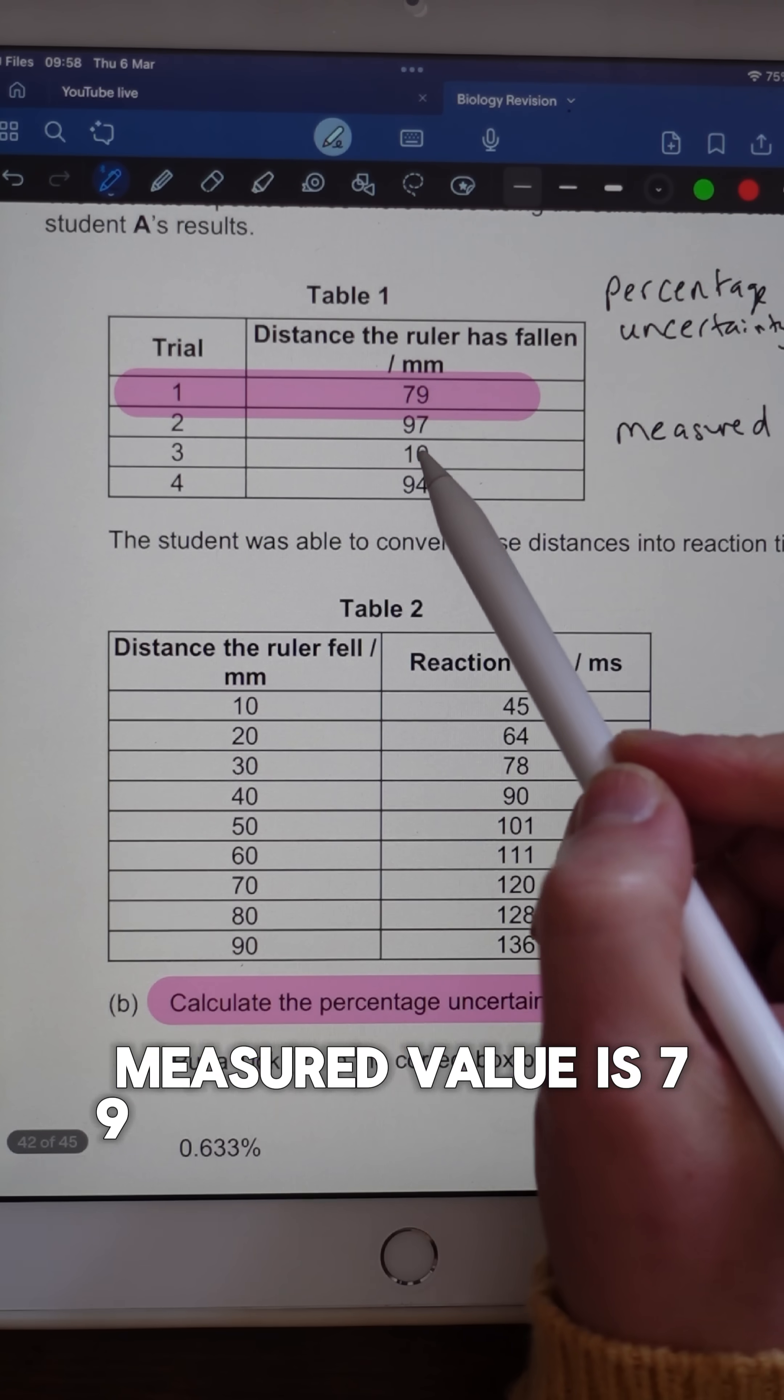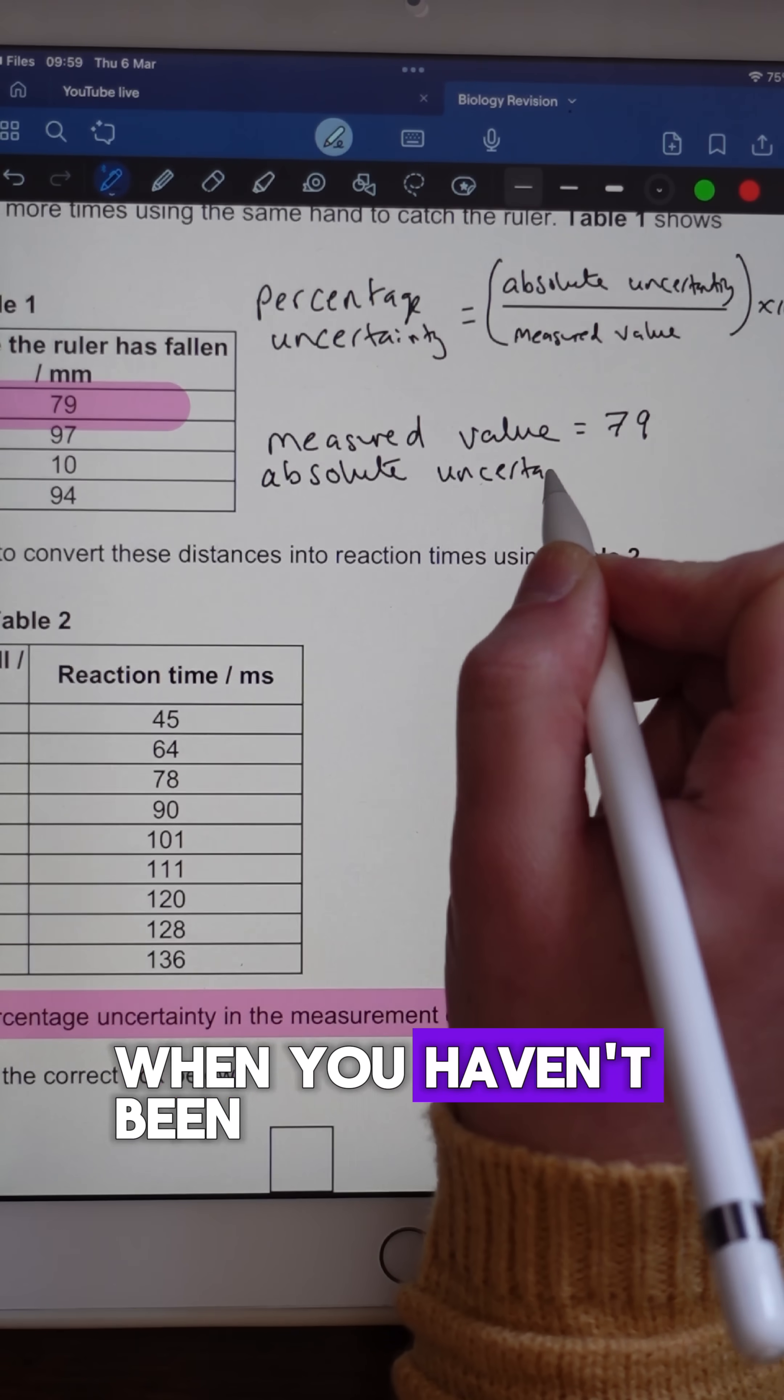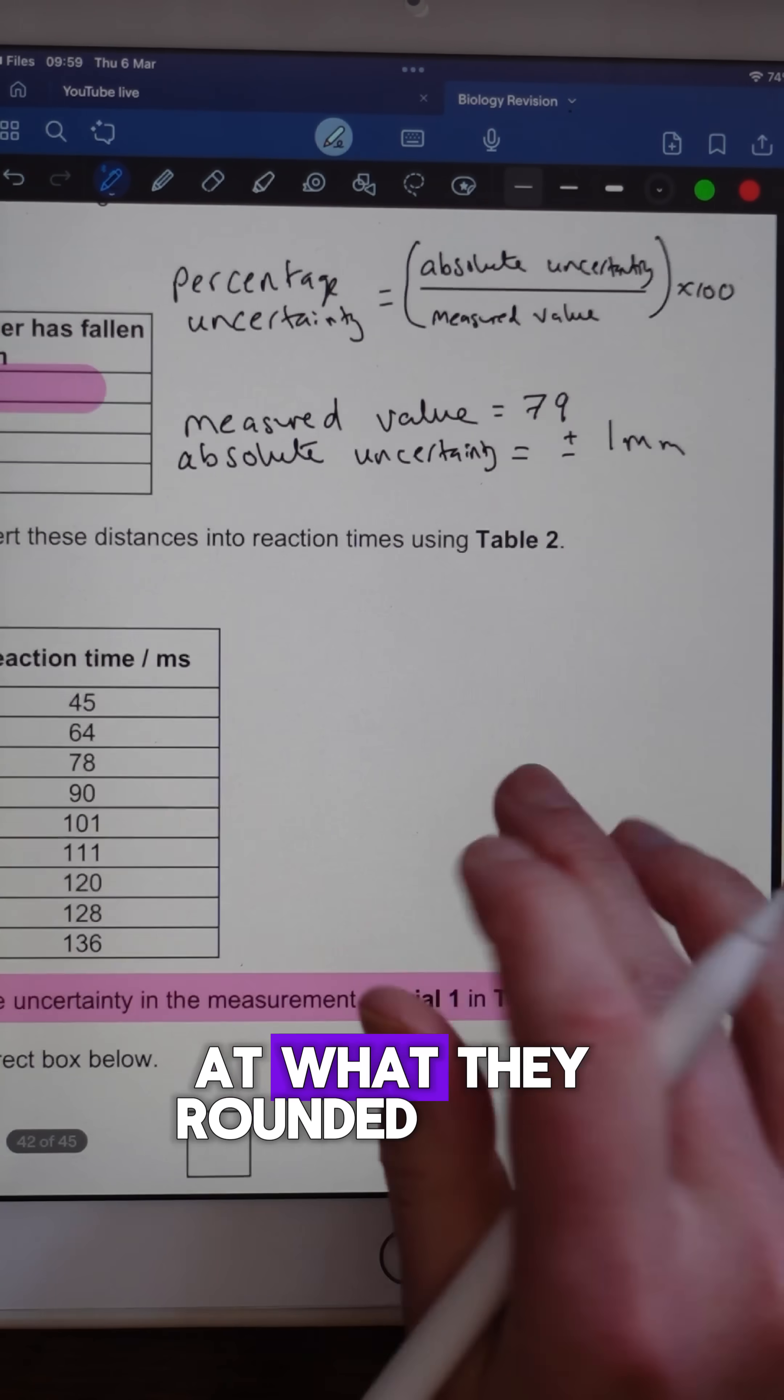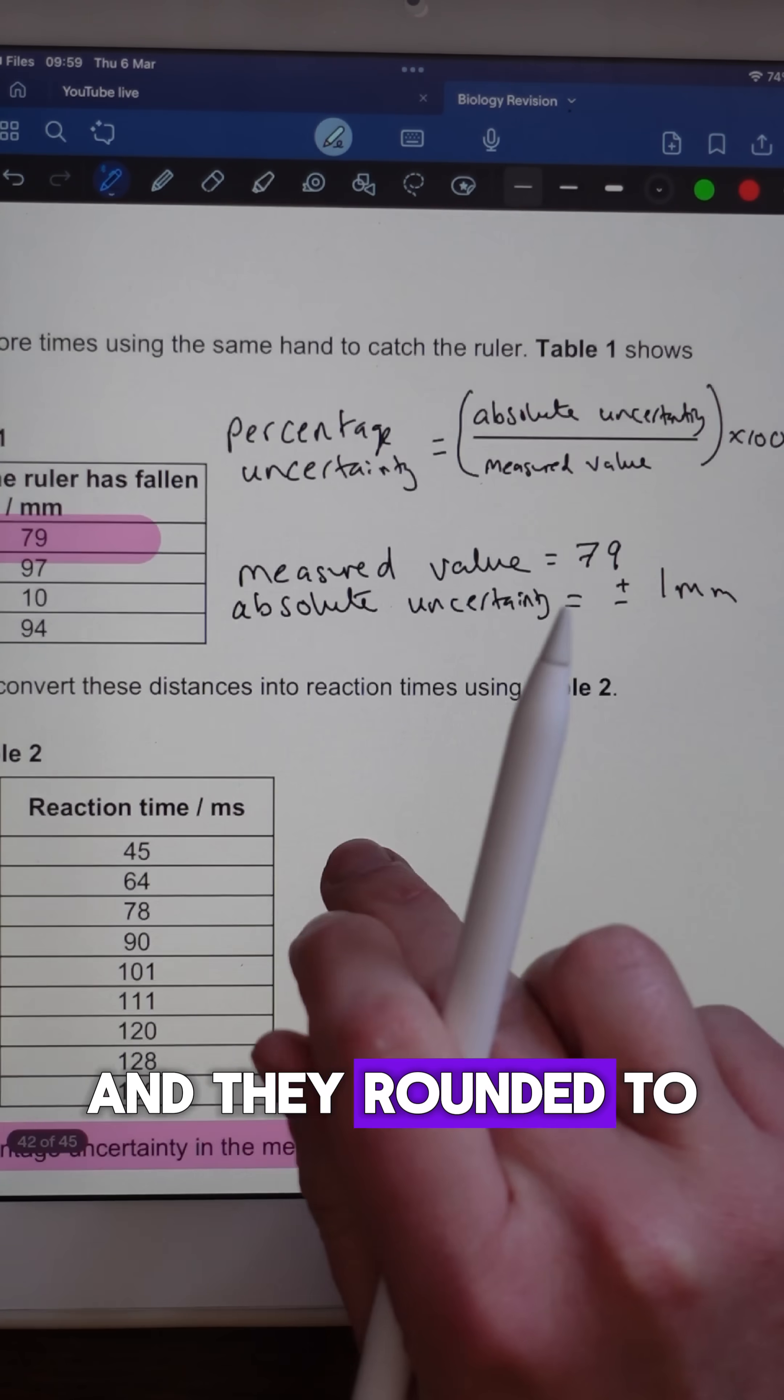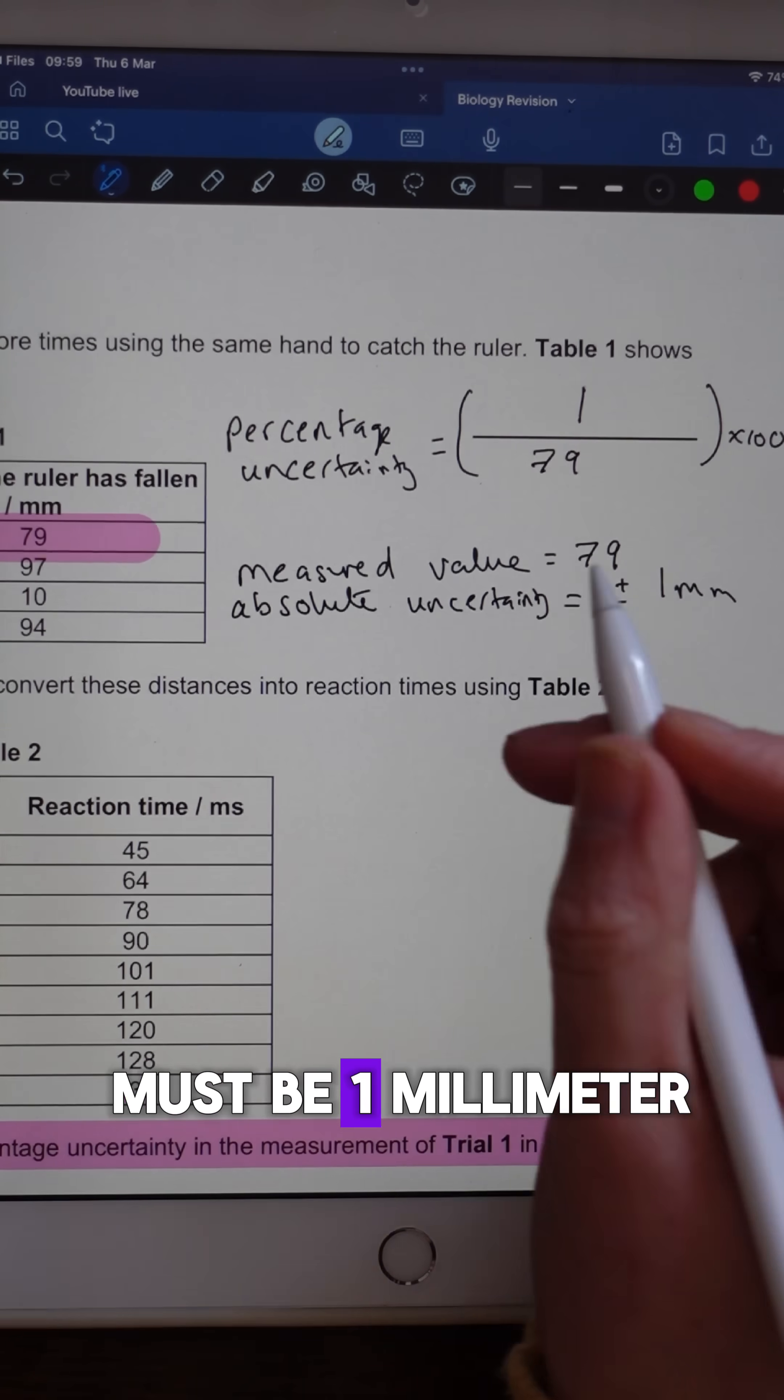So we've said our measured value is 79. To work out the absolute uncertainty when you haven't been told what the actual divisions are on your piece of apparatus, you need to look at what they've rounded to in the table and they've rounded to a whole number. So we know then that the absolute uncertainty must be one millimeter.